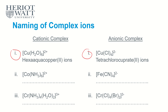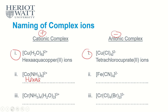Cationic means positive, anionic means negative. What is the name of a complex with six ammonia ligands? The name for ammonia as a ligand is ammine, and we have six, so it's hexaammine. The metal is positive, so it stays as cobalt. The full name is hexaammine cobalt(II).